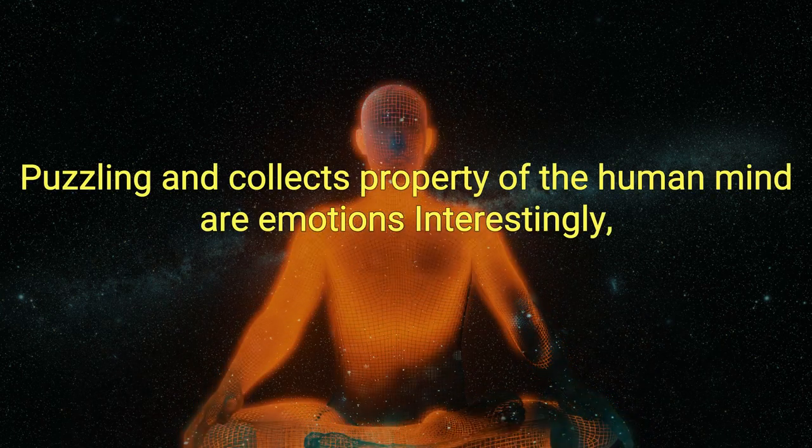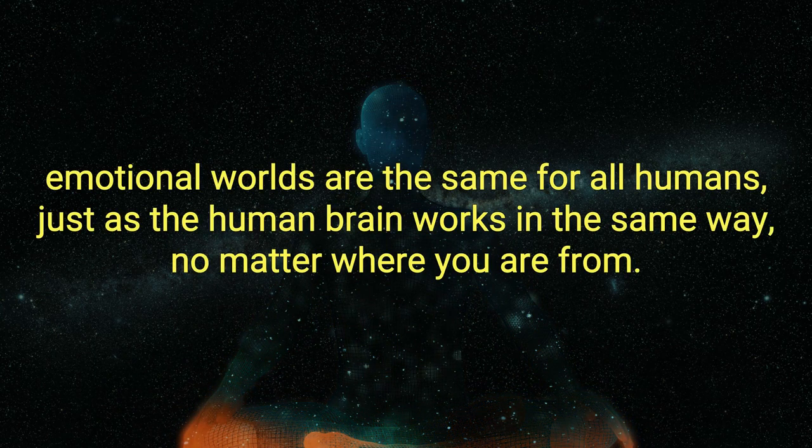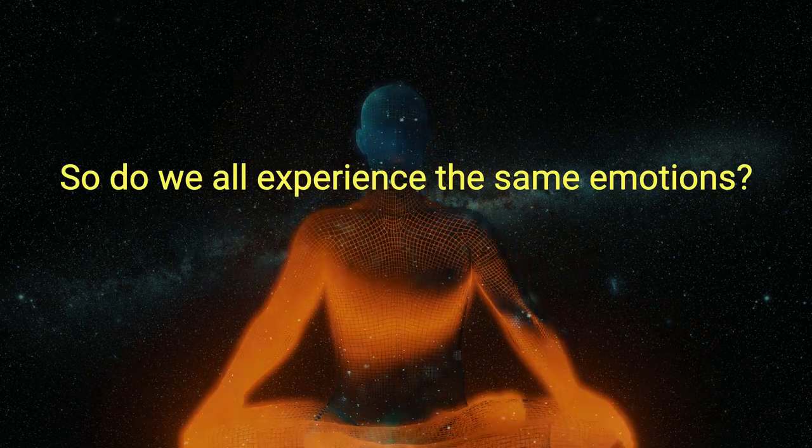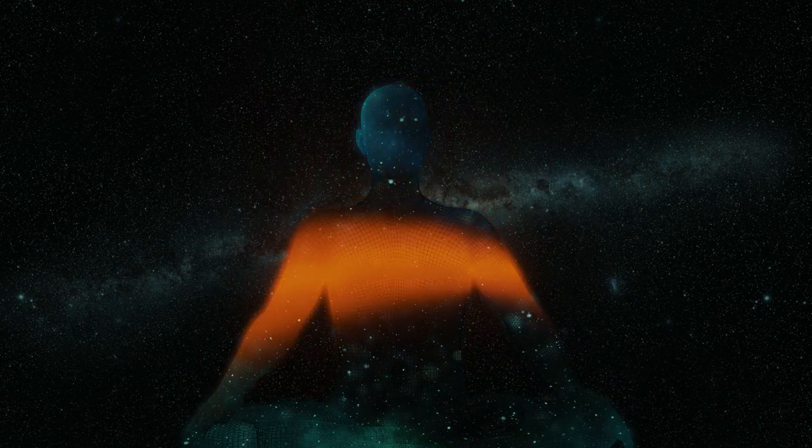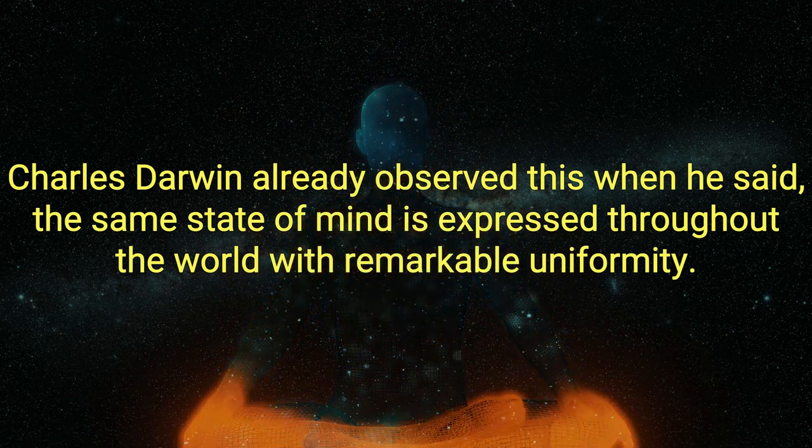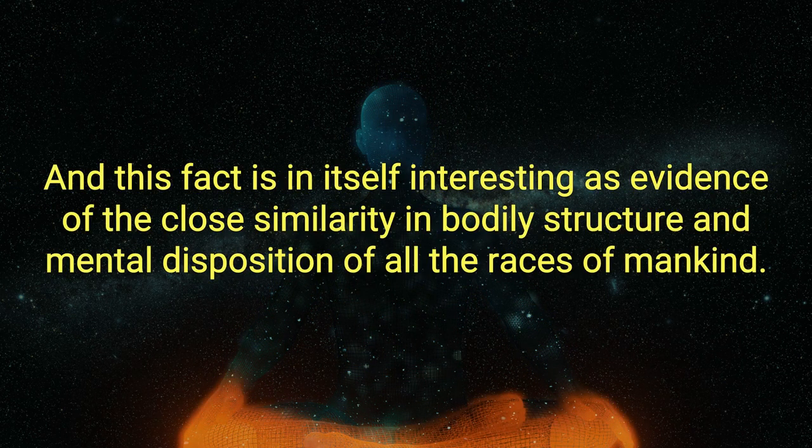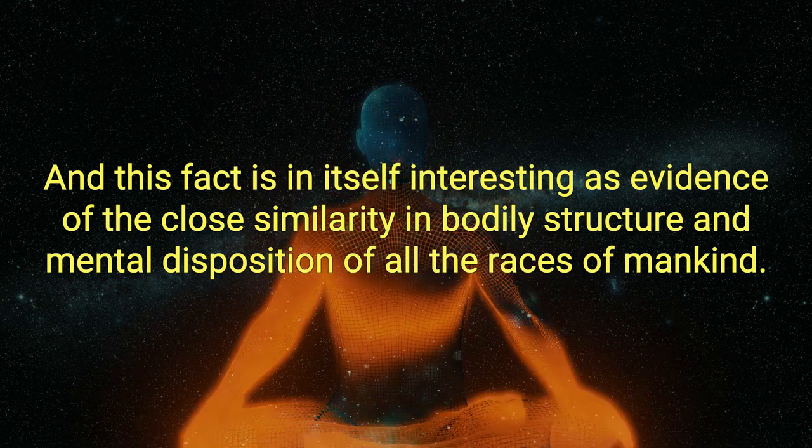Emotions. The puzzling and complex property of the human mind are emotions. Interestingly, emotional worlds are the same for all humans. Just as the human brain works in the same way, no matter where you are from, so do we all experience the same emotions. Happiness, sadness, anger, fear, disgust, and surprise. Charles Darwin already observed this when he said, the same state of mind is expressed throughout the world with remarkable uniformity. And this fact is in itself interesting as evidence of the close similarity in bodily structure and mental disposition of all the races of mankind.